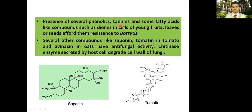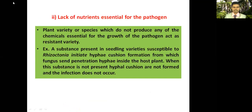Several phenolics, tannins, and fatty acid-like compounds such as dienes in cells of young fruits, leaves, or seeds afford resistance. Several other compounds like saponin and tomatine in tomato and avenacin in oats have antifungal activity. The chitinase enzyme secreted by host cells degrades the cell wall of fungi. Lack of nutrients essential for the pathogen within the host also stops pathogen development.